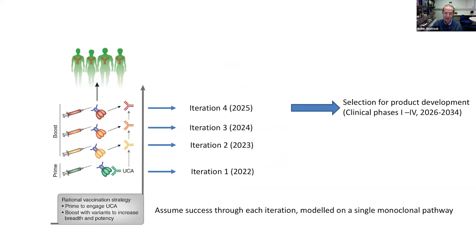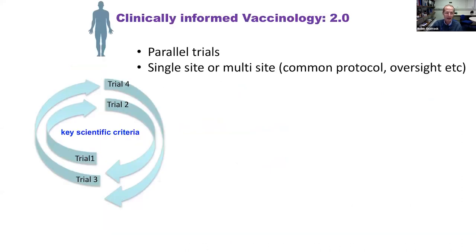This model is based on a single monoclonal pathway. It makes no sense to do this in series — rather, we should have multiple trials addressing multiple pathways at the same time, which is now possible through parallel trials at single or multiple sites using a common protocol and oversight. The technology is now there to deliver iterative trials. The onus is on the community to adopt this approach and speed up timelines in order to achieve an effective vaccine in a meaningful timescale. I hope this will stimulate discussion. Thank you.